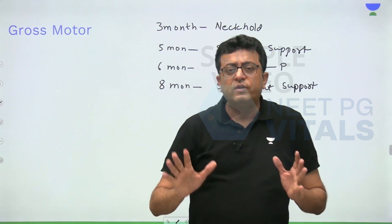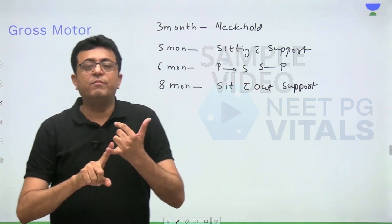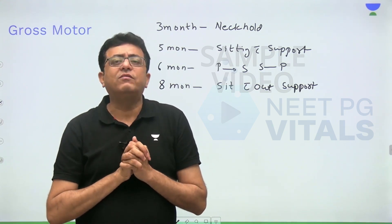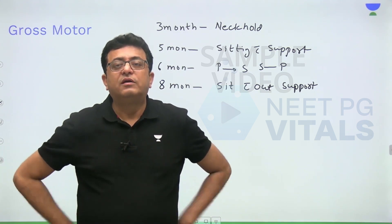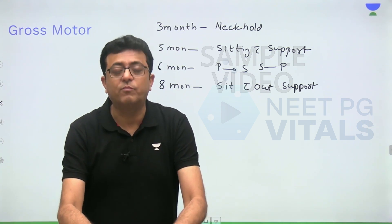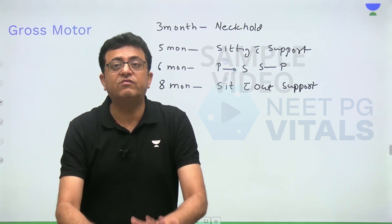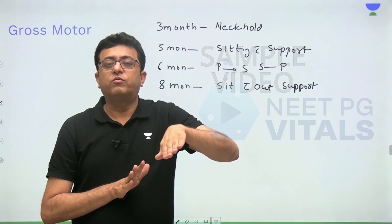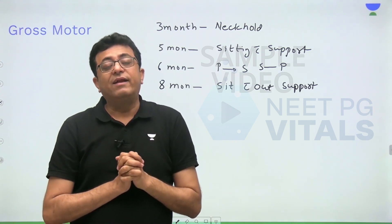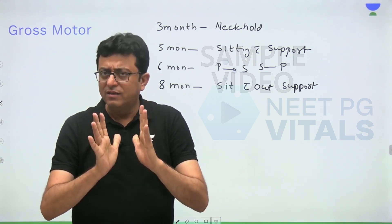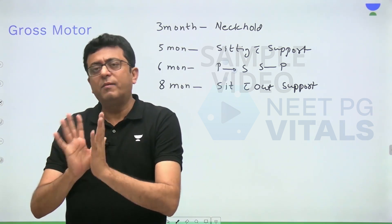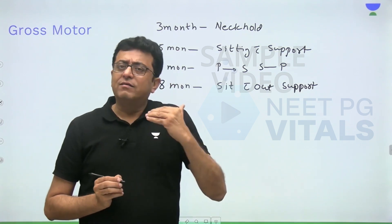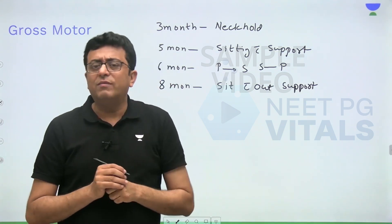Let me explain each milestone clearly. At three months, the child is able to hold the neck. At five months, sitting with support — this means the child takes support from the front hands and sits, not a back support. At six months, prone to supine and supine to prone rolling. At eight months, sitting without support.